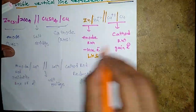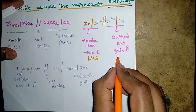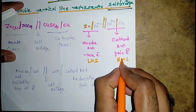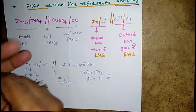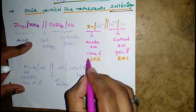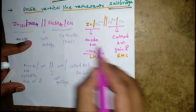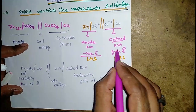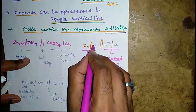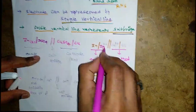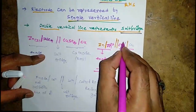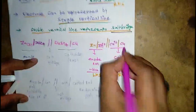The cathode must be on the right-hand side. The anode reaction is the loss of electrons: Zn → Zn²⁺. The cathode reaction is the gain of electrons: Cu²⁺ → Cu. This completes the cell representation.